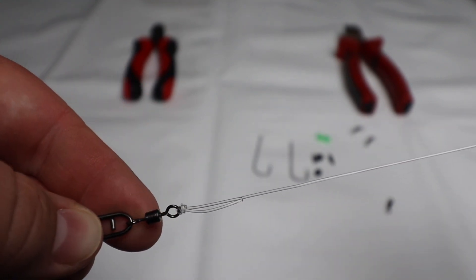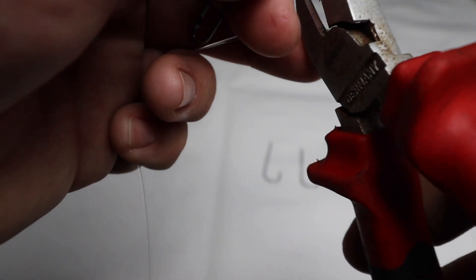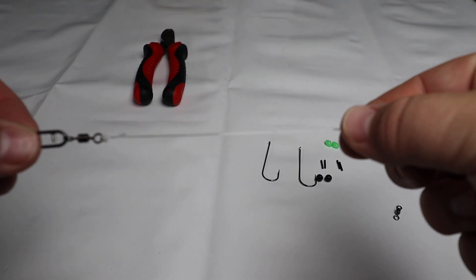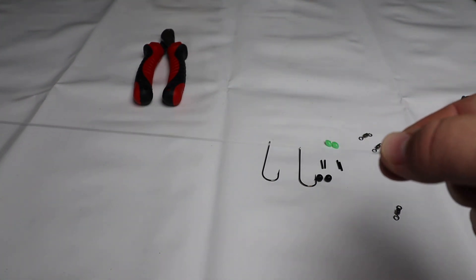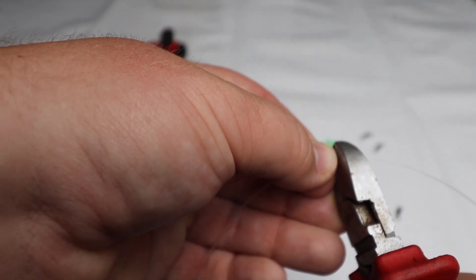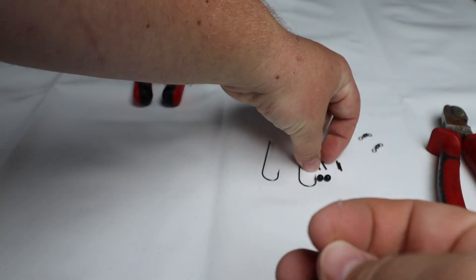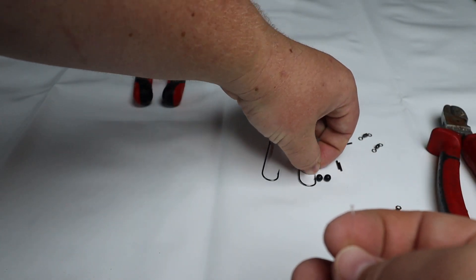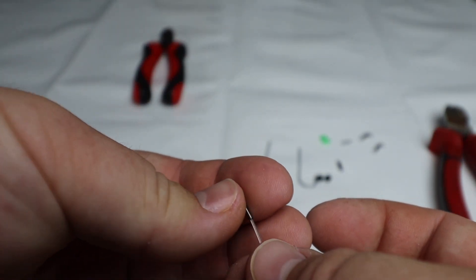It's time to move on to cut on the mainline. For this first mainline section we're probably going to cut off about two foot, and to this we're going to add two crimps, two beads and one swivel.